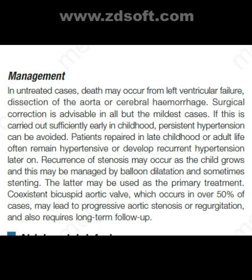Patients repaired in late childhood or adult life often remain hypertensive or develop recurrent hypertension later on. Recurrence of stenosis may occur as the child grows and this may be managed by balloon dilatation and sometimes stenting, which may also be used as the primary treatment. Co-existent bicuspid aortic valve, which occurs in over 50 percent of cases, may lead to progressive aortic stenosis or regurgitation and requires long-term follow-up.